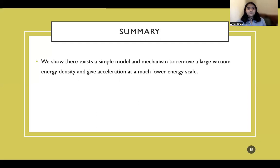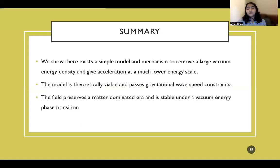So just to summarize, we show that there is a simple model that can remove a large vacuum energy density and give acceleration at a much lower energy scale as required. We show that the model is theoretically viable and passes gravitational wave speed constraints, and that it also preserves a matter dominated era, which is what a lot of scalar field models tend to struggle with and is stable under a vacuum energy phase transition.